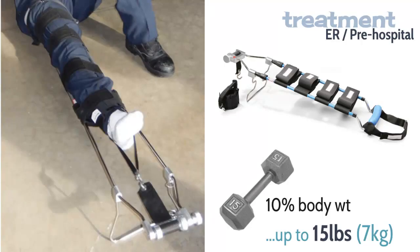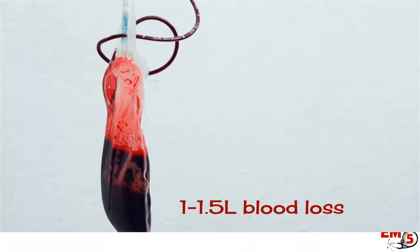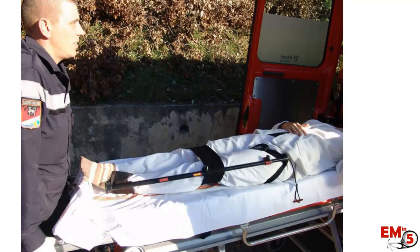As far as treatment in the ER and even the pre-hospital setting, we need to put the patient in a traction splint. The goal is about ten percent of the patient's body weight on that leg, up to about 15 pounds or seven kilograms. This stabilizes the fracture but also distracts it, which decreases the potential space where a hematoma can form. Remember, the average blood loss in a closed femur fracture is 1 to 1.5 liters — pretty significant. You can even apply a traction splint pre-hospital, especially if transit time is going to be prolonged.